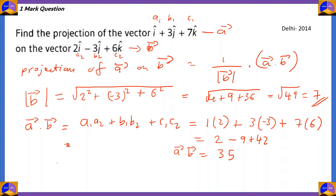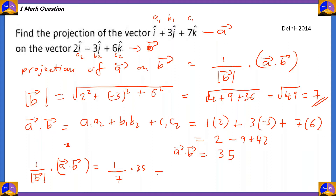Now what about the projection of vector a on vector b? Let's plug in these values into the formula. 1 by modulus of vector b times vector a dot vector b = (1/7) × 35 = 35/7 = 5. So the projection of vector a on vector b is equal to 5, and that's how you find the projection of vectors.